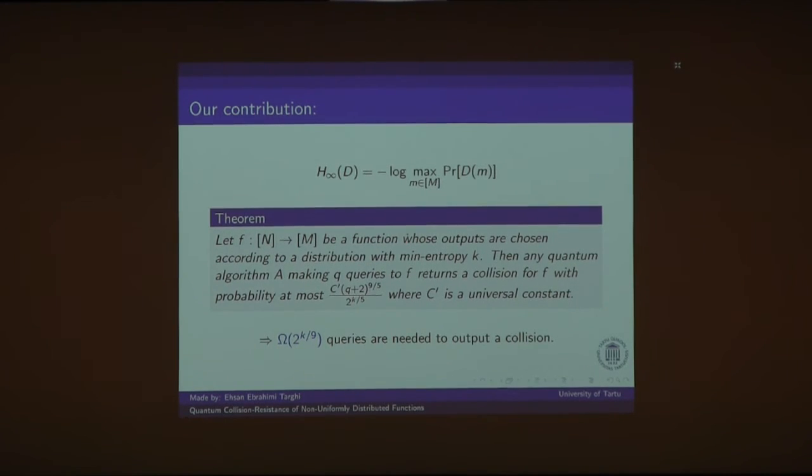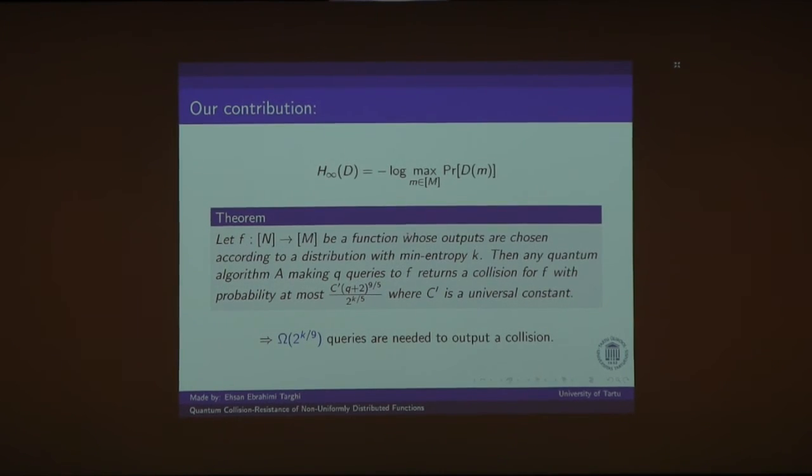And here is our result. Let f be a function whose outputs are chosen according to a distribution with min-entropy K. And any quantum adversary A making Q queries to f will return a collision with probability at most O of Q to power 9/5 over 2 to power K/5, where C is a universal constant. And you can see that when K is big, this is negligible probability. And this means that omega of 2 to the power K/9 is a lower bound for outputting a collision in the non-uniform case.